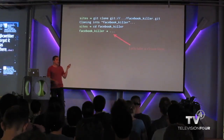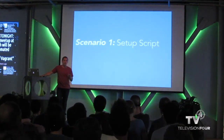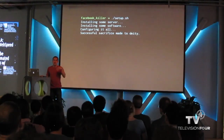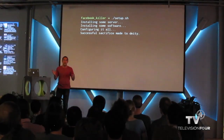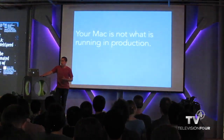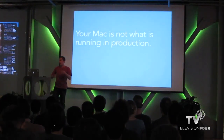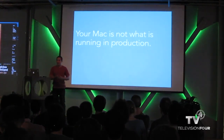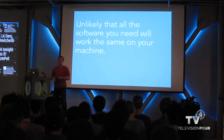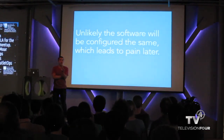We're going to look at three scenarios and what they mean. Scenario one: you have a setup script — GitHub still does this a little bit. You check it out, run some scripts, and it sets everything up. But this has a lot of problems. Your Mac is not what's running in production, so you're installing software that's compiled differently, with different flags. Some stuff doesn't even compile on whatever platform you're developing on.